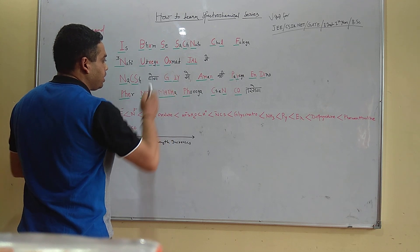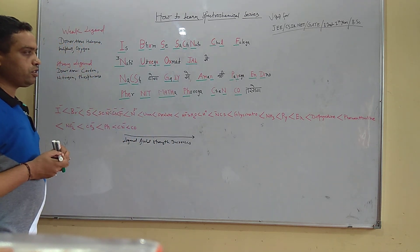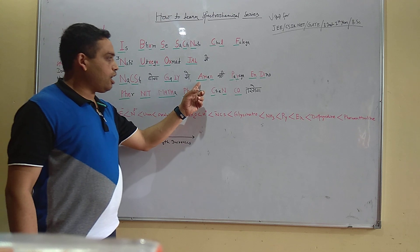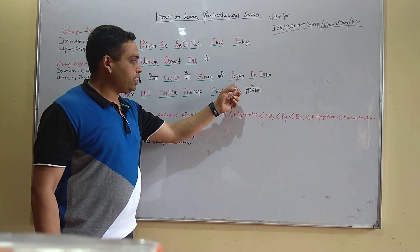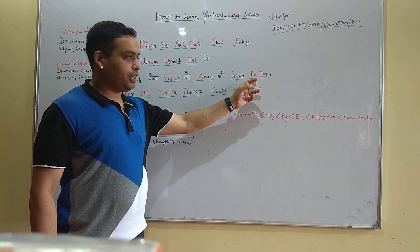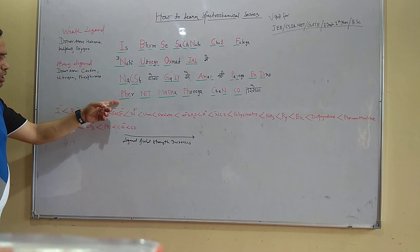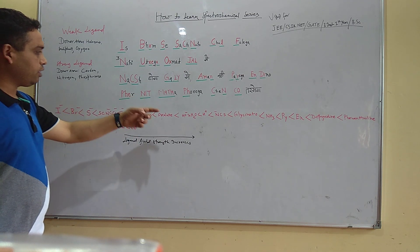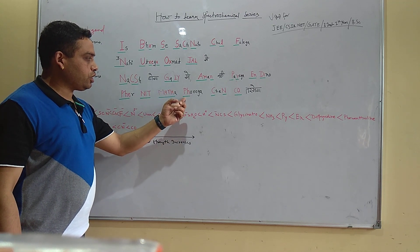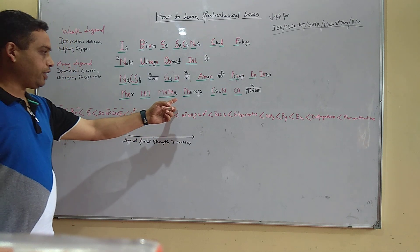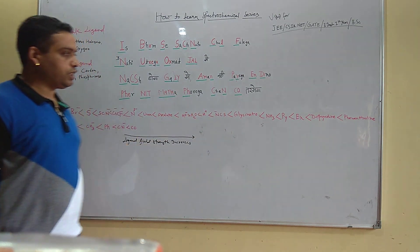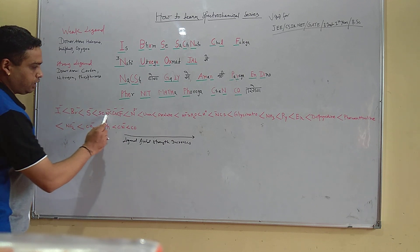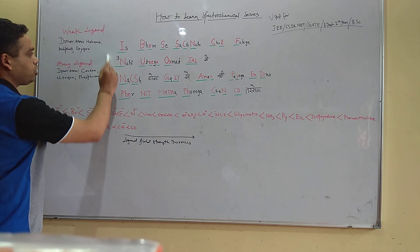Next is gly, that is glycinato. You can eliminate this 'a' here, glycinato would be quite easy. Then amn is ammonia, py is pyridine, en is ethylene diamine, di is dipyridine, phe is phenanthroline, nit is nitro and nitro negative, then meth is methyl, and phen is phenanthroline, and CN is cyanide, and CO is carbon monoxide.